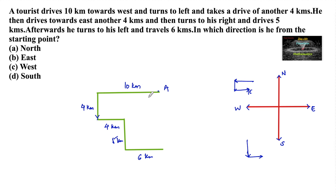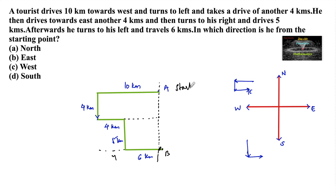In which direction is he from the starting point? We can observe that 4 km plus 6 km gives a total of 10 km eastward, parallel to the original 10 km westward move. So the starting point and the final position B are on the same vertical line. Therefore B is in the south direction from the starting point, so option S is the answer.